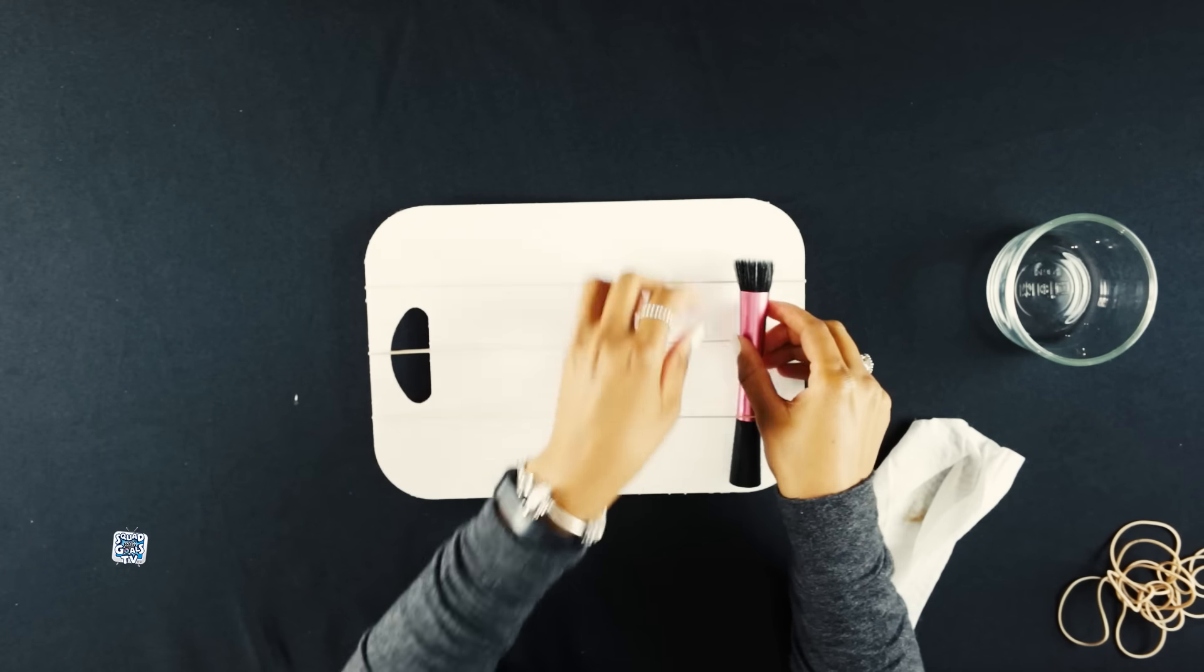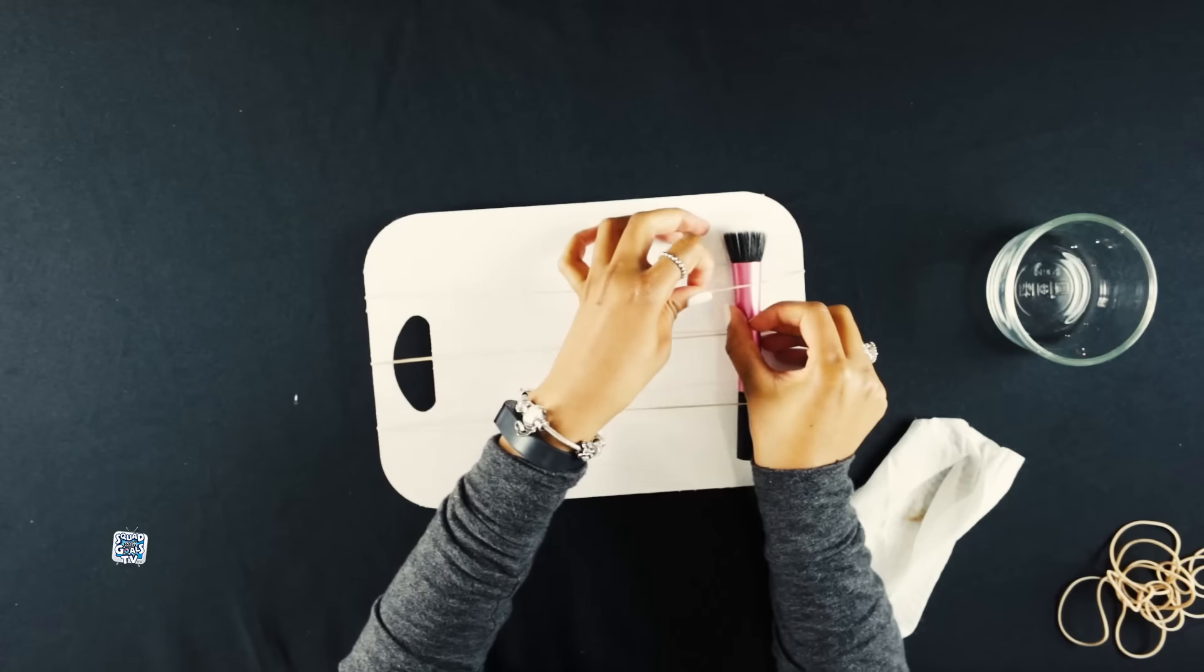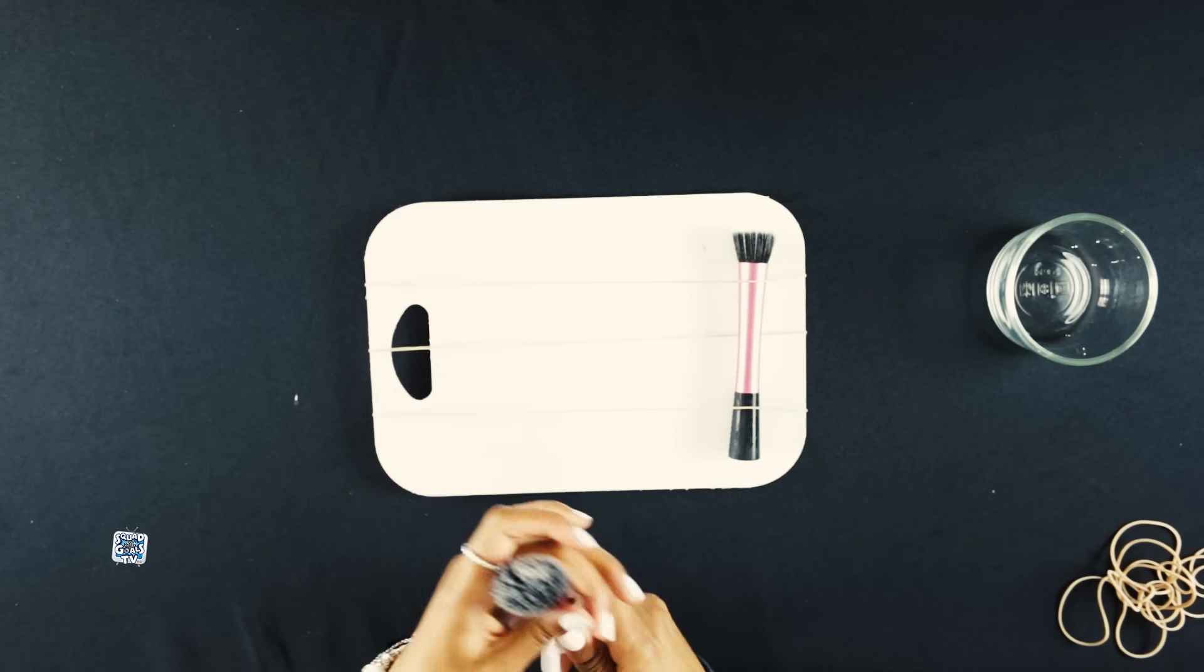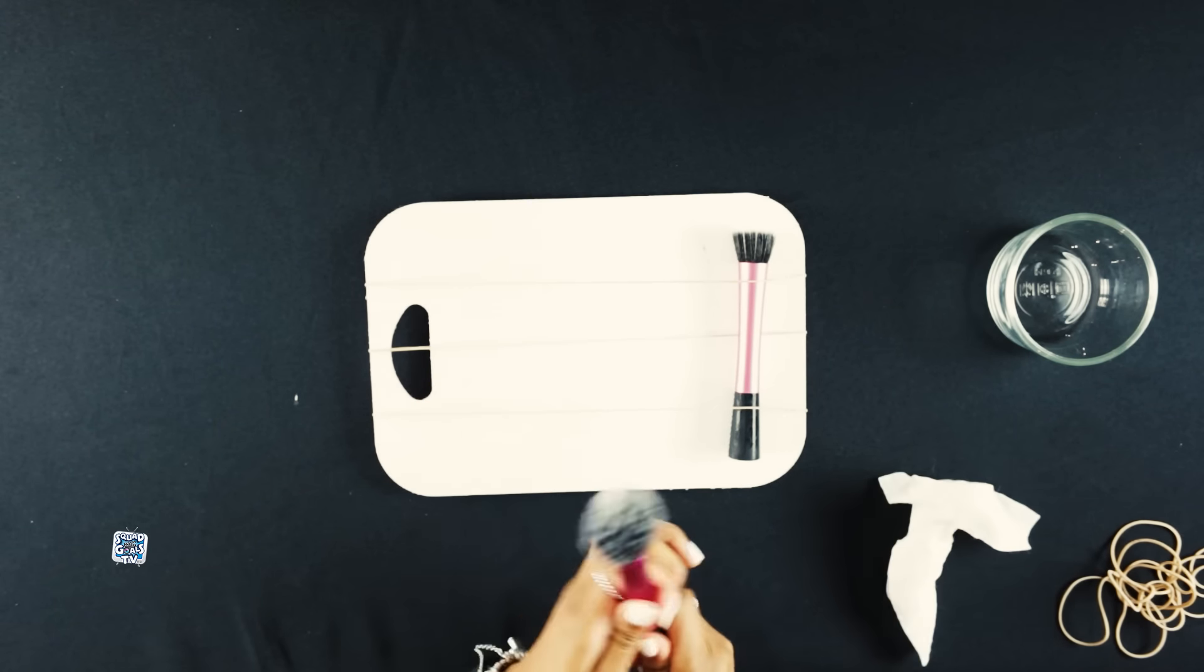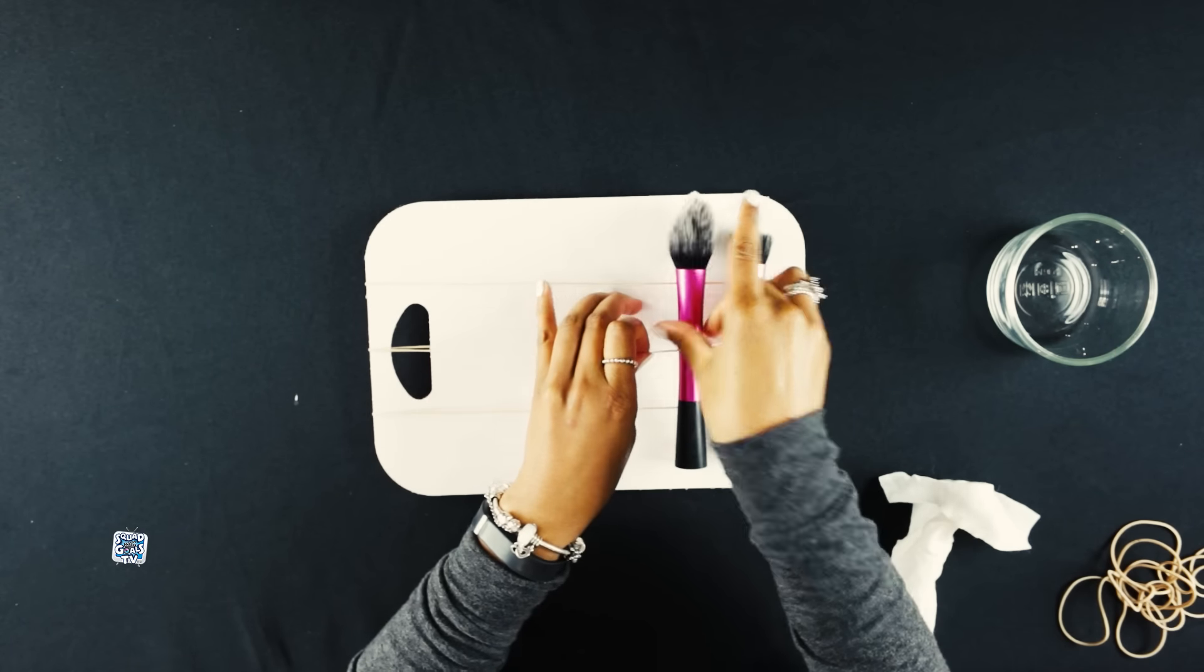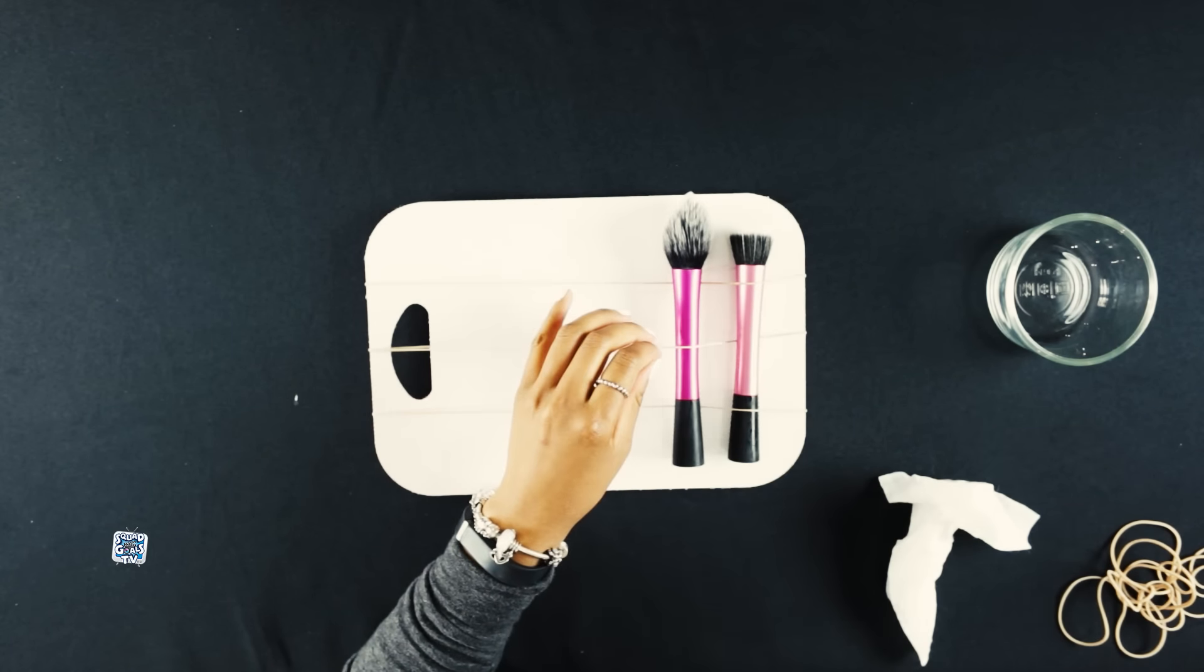And then you'll take your last elastic and put it at the top. You'll want to put the brush in like this. Then you'll take your next brush, clean the handle, and instead of going like that you'll take the middle one and put your brush like this. And then you'll continue doing that with all your brushes.